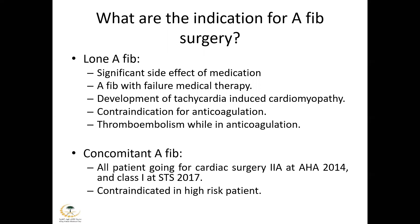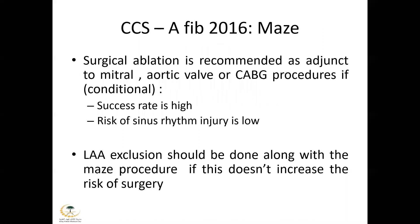For concomitant atrial fibrillation — when a patient comes for another cardiac surgery and also has AF — according to AHA guidelines, there is no class 1 indication for AF ablation; it is class 2A. However, the STS 2017 guideline classifies it as class 1. It is contraindicated in high-risk patients, though subsequent data will show it is useful even in high-risk people. According to 2016 Canadian guidelines, surgical ablation is recommended as adjunct to mitral, aortic, or CABG procedures — conditionally — if success rate is high and risk of sinus node injury is low; and left atrial appendage occlusion should be done with maze procedure if it does not increase surgical risk.